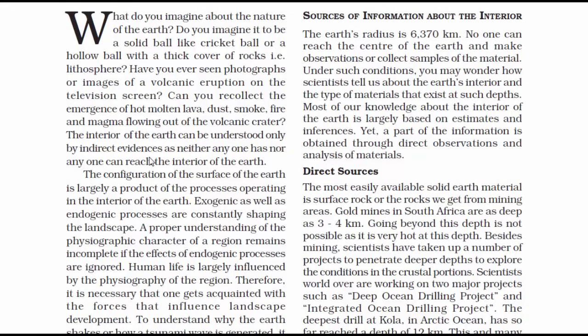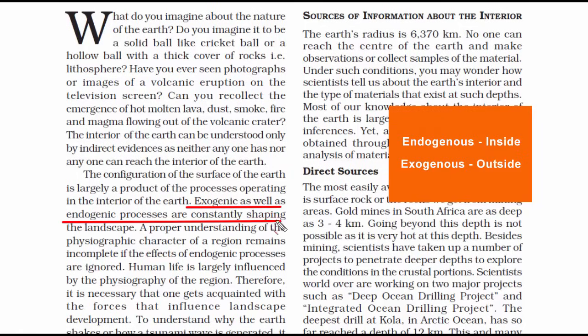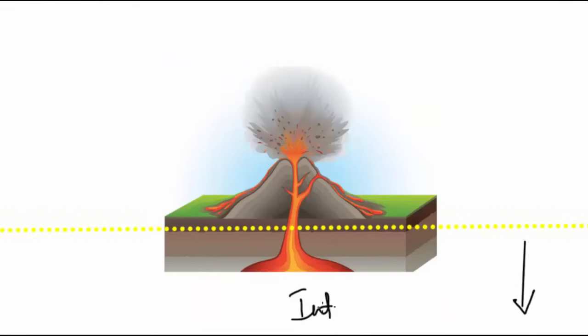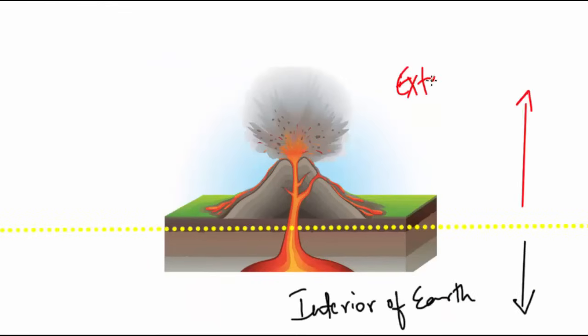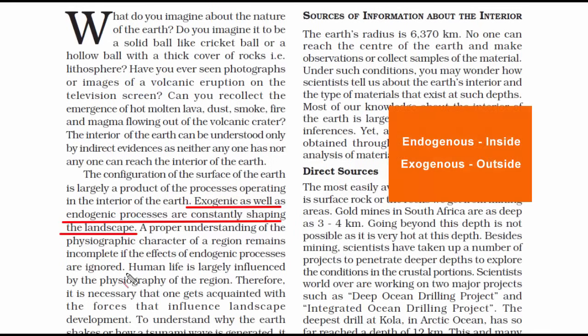The landscape that we see around us is a result of constant endogenous and exogenous processes. Endogenous means internal and exogenous is external. Internal processes such as volcanic activities, folding of the crust, and faulting due to plate tectonic activities — all these processes change the landscape and they are collectively known as endogenous processes.